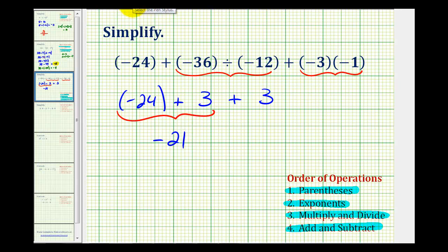So now we have (-21) + 3, and this sum would be (-18). Again, we're adding integers with different signs. The negative outweighs the positive, therefore the sum is negative, and because they're different signs, we subtract their absolute values, which gives us a sum of (-18).